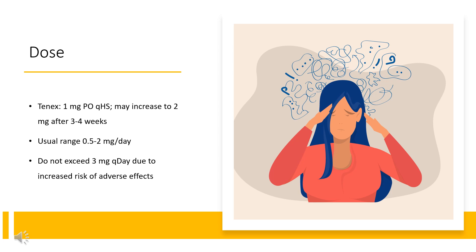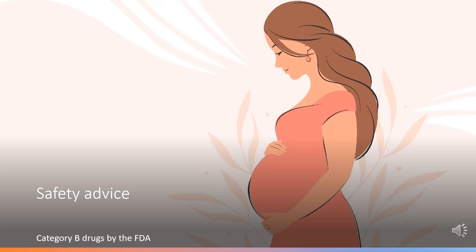Migraine prophylaxis, off-label: Initial 1mg per day, do not exceed 3mg per day. Safety Advice — US FDA Pregnancy Category B: Animal reproduction studies have failed to demonstrate a risk to the fetus and there are no adequate and well-controlled studies in pregnant women.